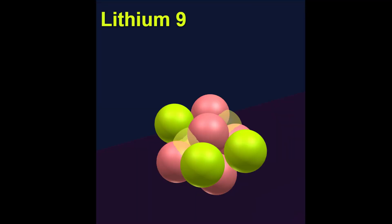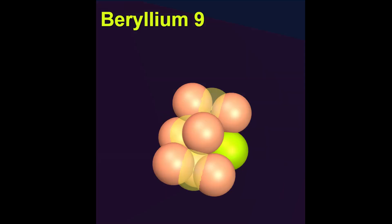Beyond this we find lithium 9 which decays into beryllium 9 which has a stable structure comprised of tetrahedrons with shared protons.